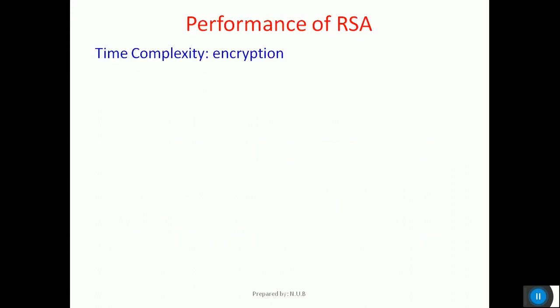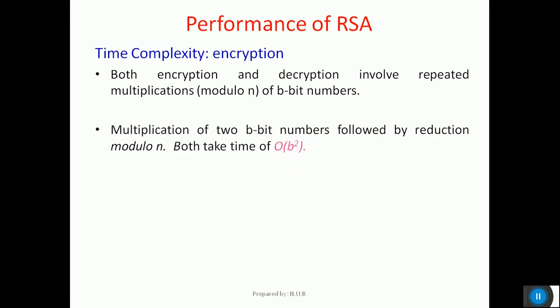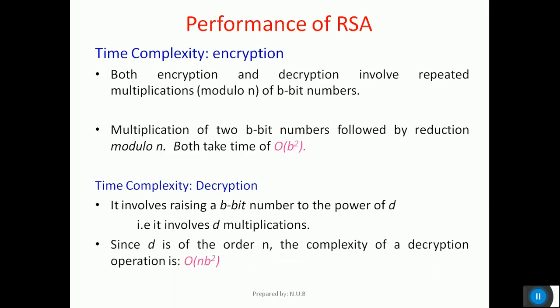Now we will see the complexity of the RSA algorithm. First, the encryption process involves the multiplication of B-bit numbers followed by a modulus operation under N. So the time complexity can be given as O(B²). Similarly, the time complexity of decryption involves raising a B-bit number to the power of D, and it involves D multiplications of the base number. Since D is of the order N, the complexity of the decryption process can be given as O(N · B²).